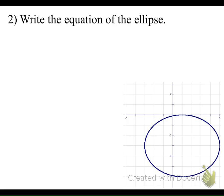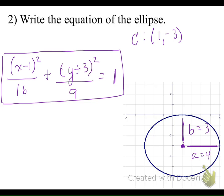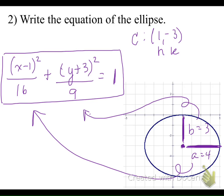For this last example of writing the equation of an ellipse, pause the video and try it on your own: find the center, the horizontal and vertical distances, substitute everything into the equation, then come back to check. The center of this ellipse is at (1, −3). The horizontal distance from the center to the ellipse is 4 units, so it becomes 16 in the equation. The vertical distance is 3 units, so it becomes 9 under the y squared term. Make sure your equation of an ellipse is always set equal to 1 and that there is addition between the two terms.